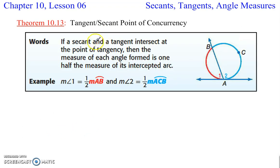Now a secant and a tangent, if they intersect at the point of tangency, then the angle formed is half that of the measure of the intersected arc. Same thing on the other side here, this angle measure 2 is half of the arc from B to C to A.